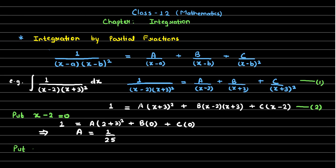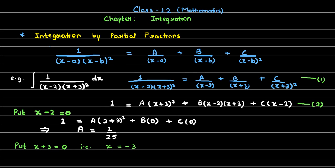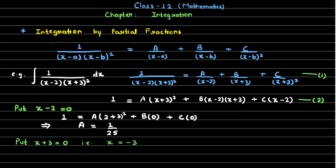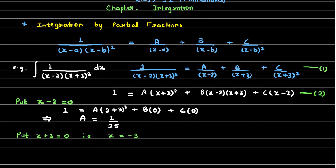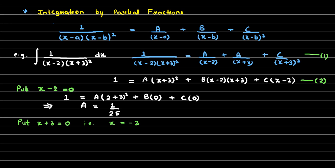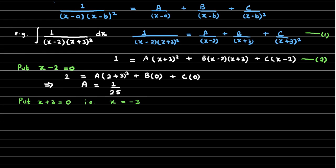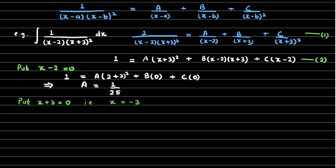Next, put x plus 3 equals zero, meaning x equals minus 3. Substituting: on the left hand side we have 1, and the A and B terms become zero, leaving C times (minus 3 minus 2). From this expression the value of C comes out to be minus 1 over 5.